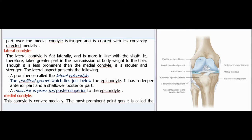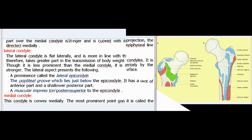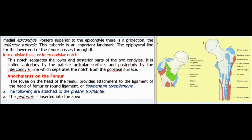The lateral condyle is flat laterally and more in line with the shaft; it therefore takes greater part in the transmission of body weight to the tibia. Though less prominent than the medial condyle, it is stouter and stronger. The lateral aspect presents a prominence called the lateral epicondyle, the popliteal groove just below the epicondyle (with a deeper anterior part and shallower posterior part), and a muscular impression posterosuperior to the epicondyle. The medial condyle is convex medially; its most prominent point is called the medial epicondyle. Posterosuperior to the epicondyle there is a projection called the adductor tubercle, which is an important landmark. The epiphyseal line for the lower end of the femur passes through it.